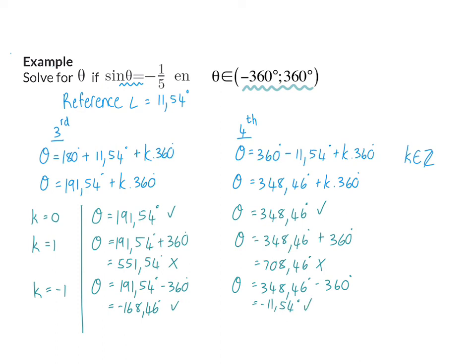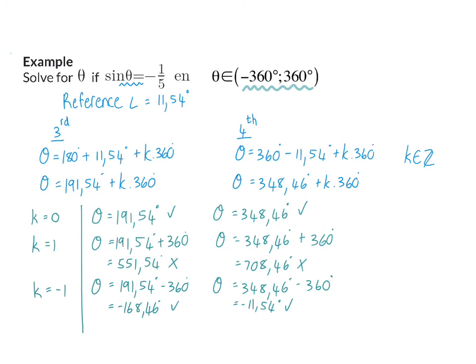If we substitute minus two, you will see that both answers are smaller than the interval. So in the given interval, there are four possible answers for theta, and we can finalize our answer by listing them in ascending order. To go from a general solution to specific answers for an interval, we simply substitute k with any integer and see which values fall in our given interval.